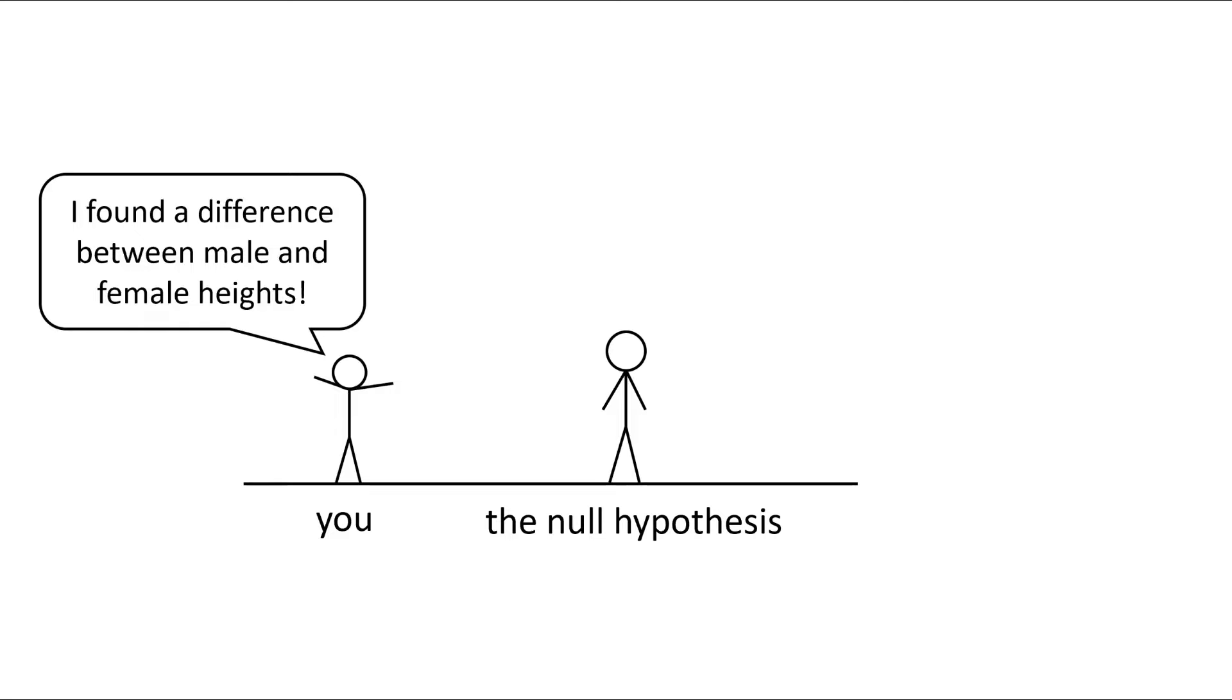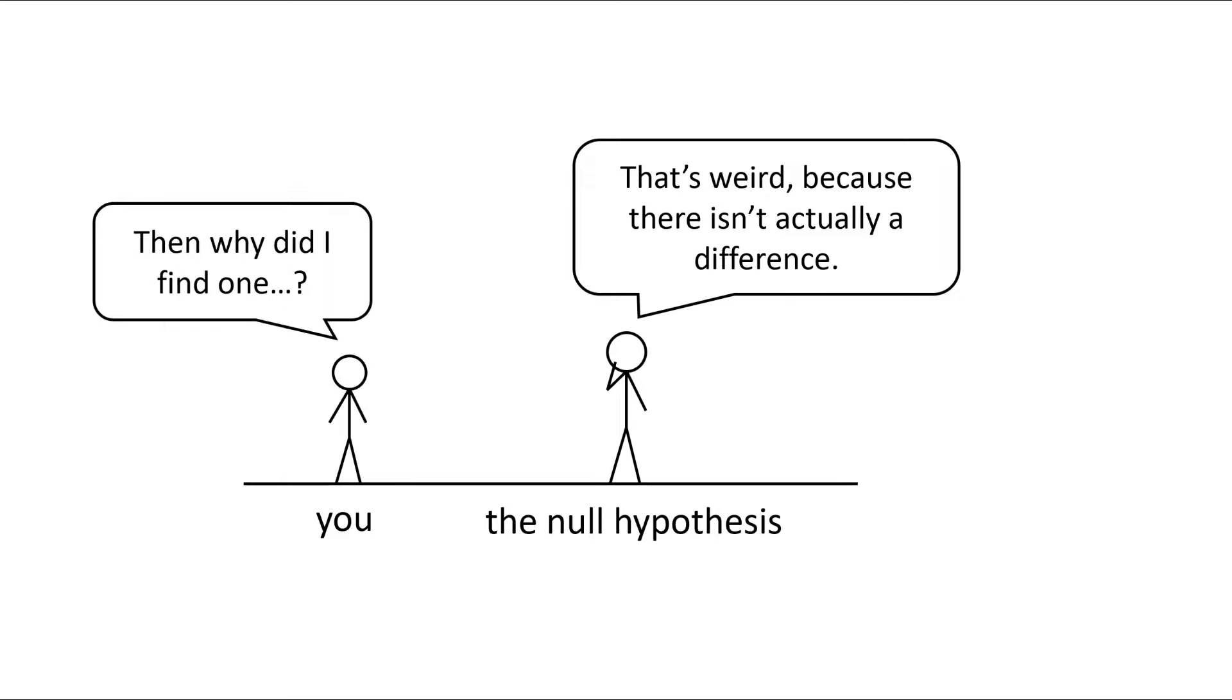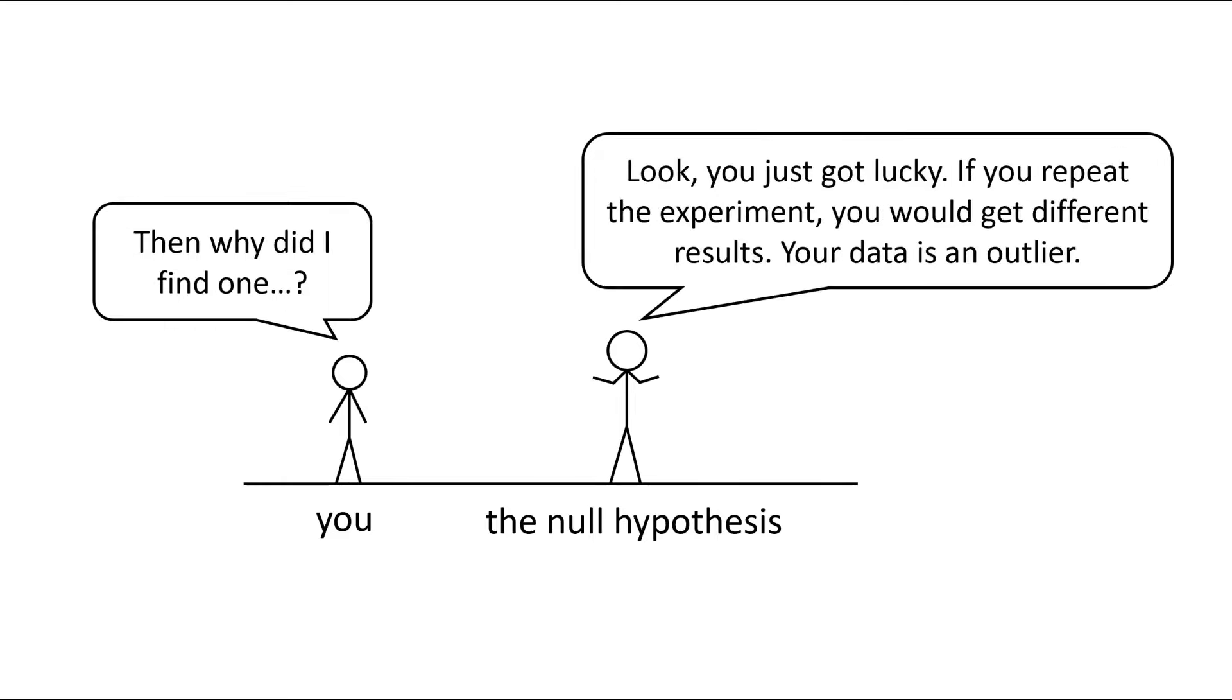Let's repeat the same conversation and this time we'll add the t-test, and this time you are talking to the null hypothesis. I found a difference between male and female heights. That's weird because there isn't actually a difference, says the null hypothesis. You reply, then why did I find one? Look, you just got lucky. If you repeat this experiment, you'll get totally different results. Your data is just an outlier.